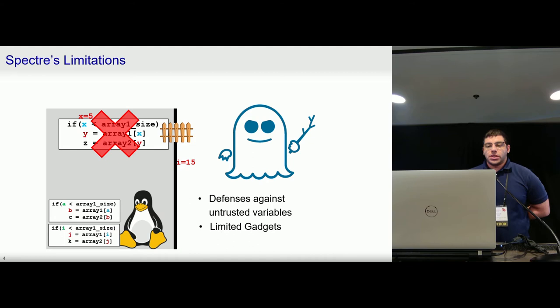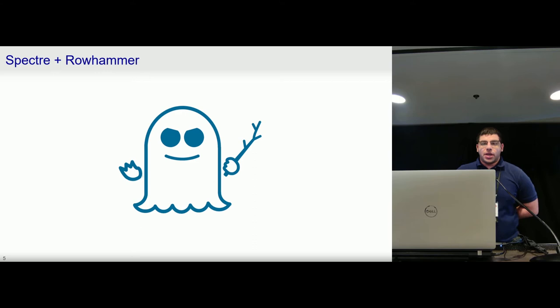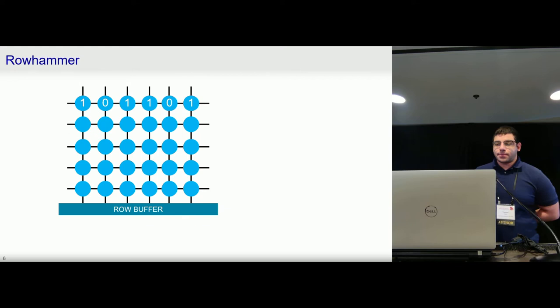What would be quite nice would be if we had a way to write to these kernel variables indirectly even though we aren't privileged users. And it turns out there is another vulnerability that will let us do exactly that called Rowhammer. This allows us to flip bits in memory that we don't have access to by rapidly accessing addresses that we do control. And this paper explores what happens when we combine these two attacks and how we can use this to create a more flexible Spectre attack.